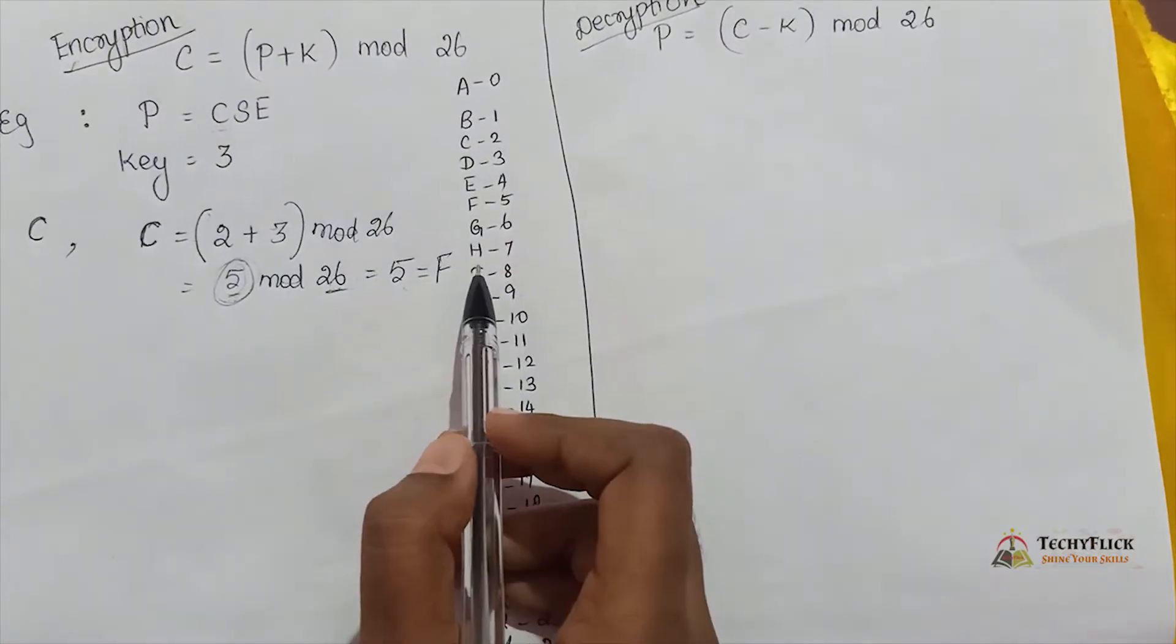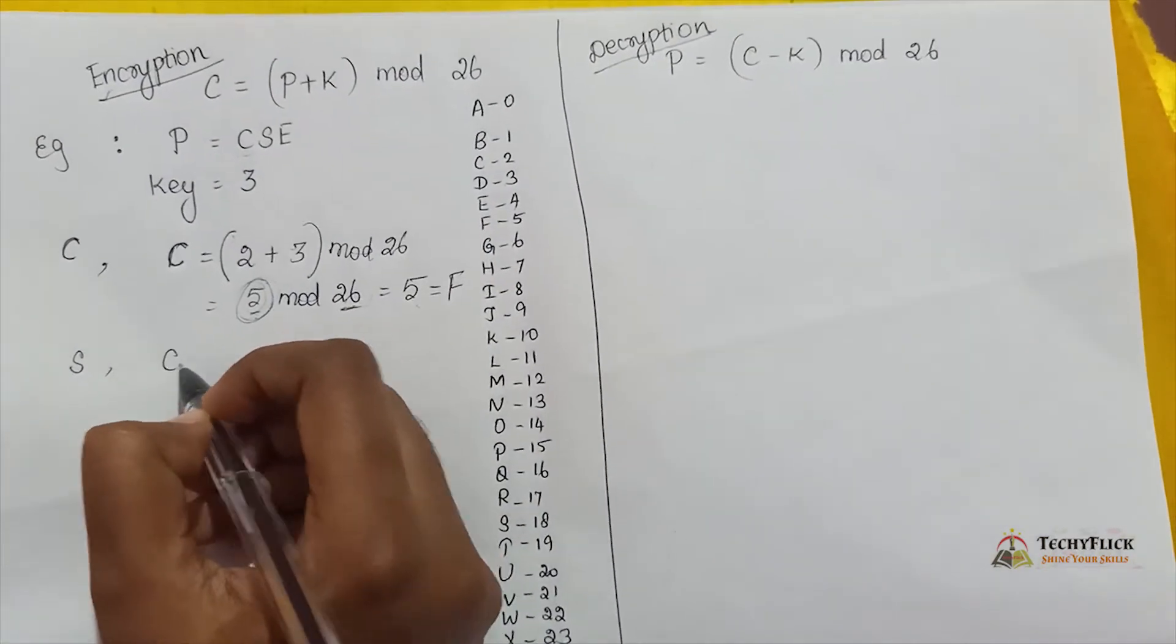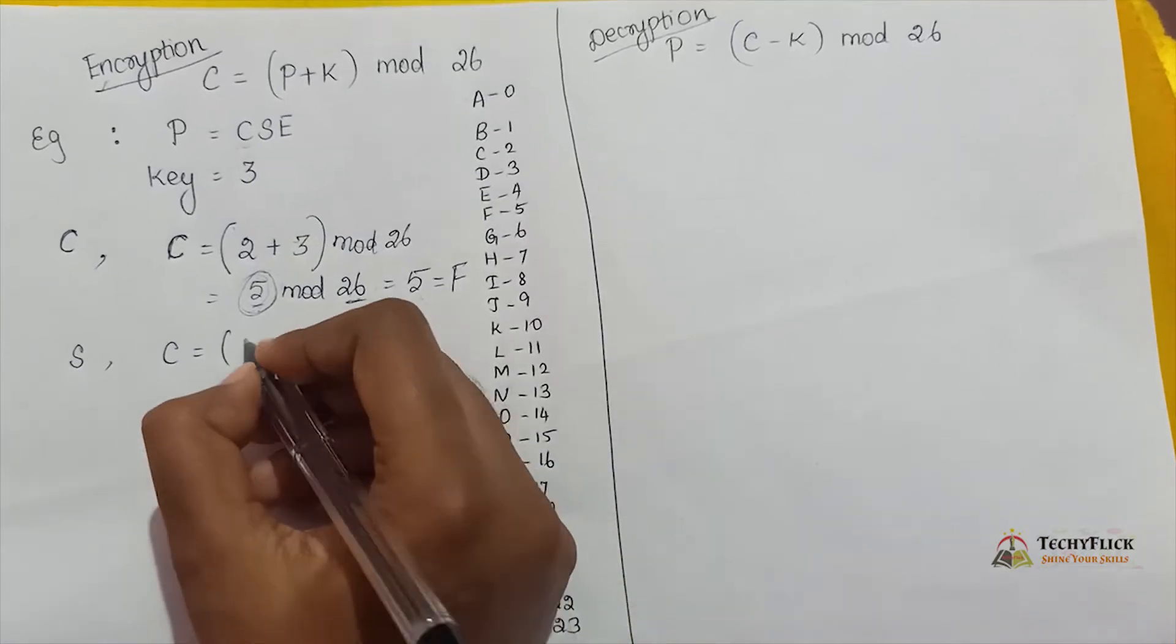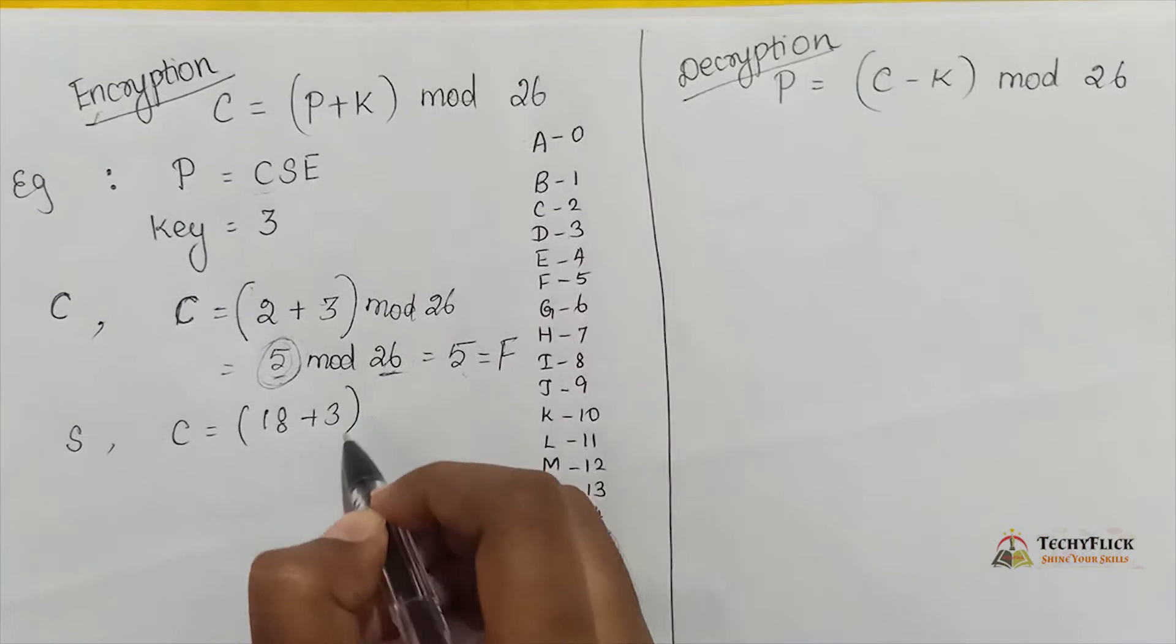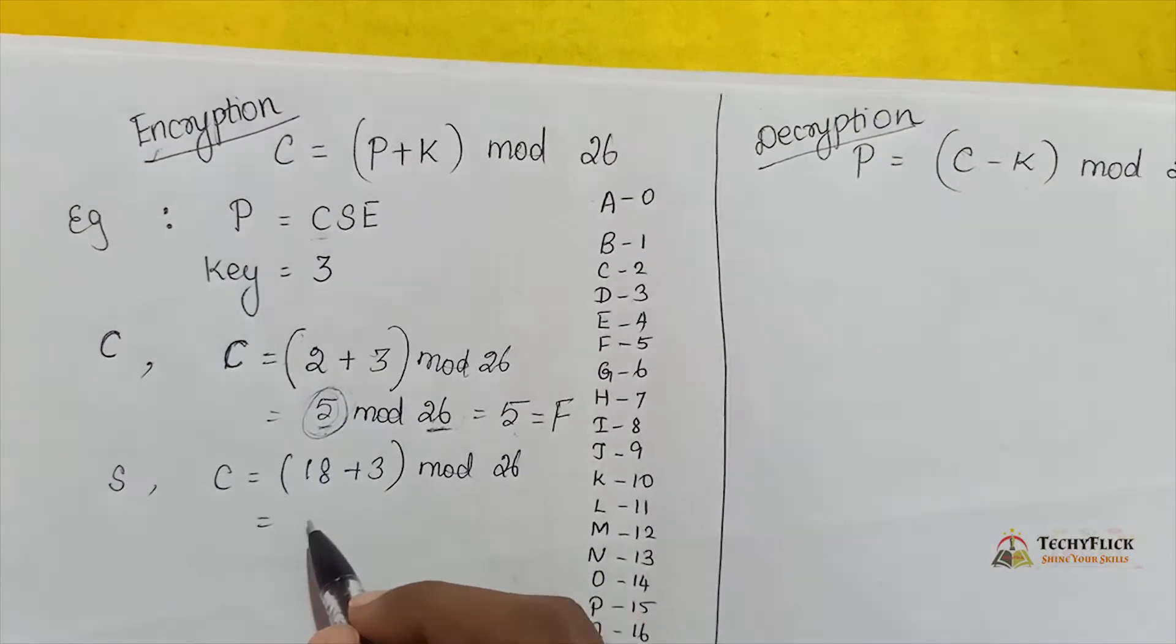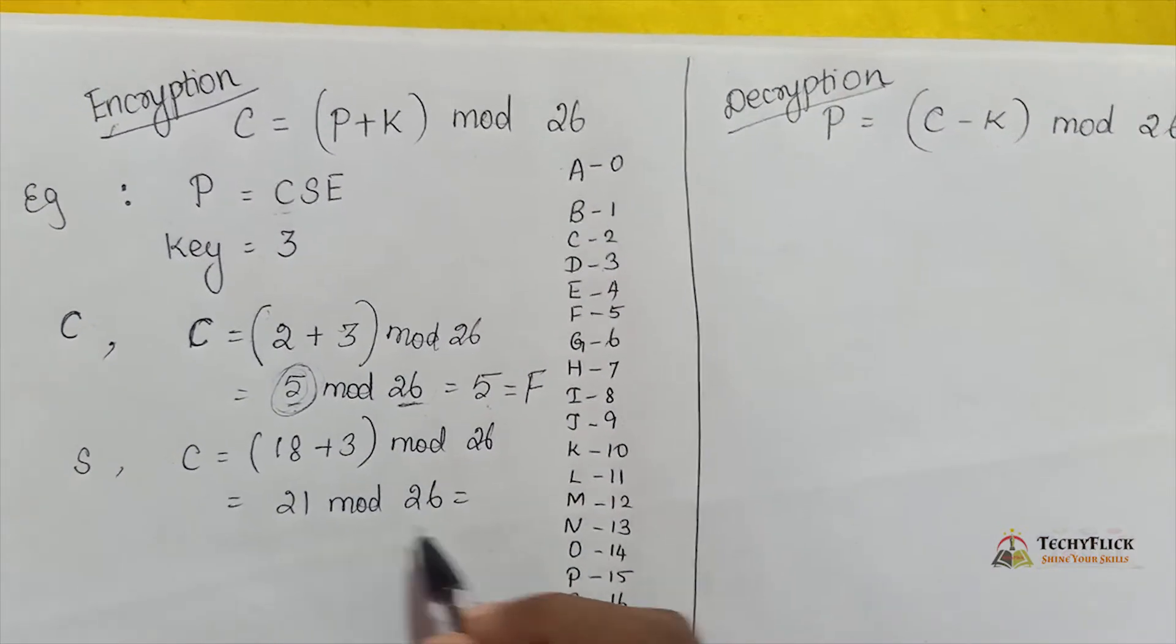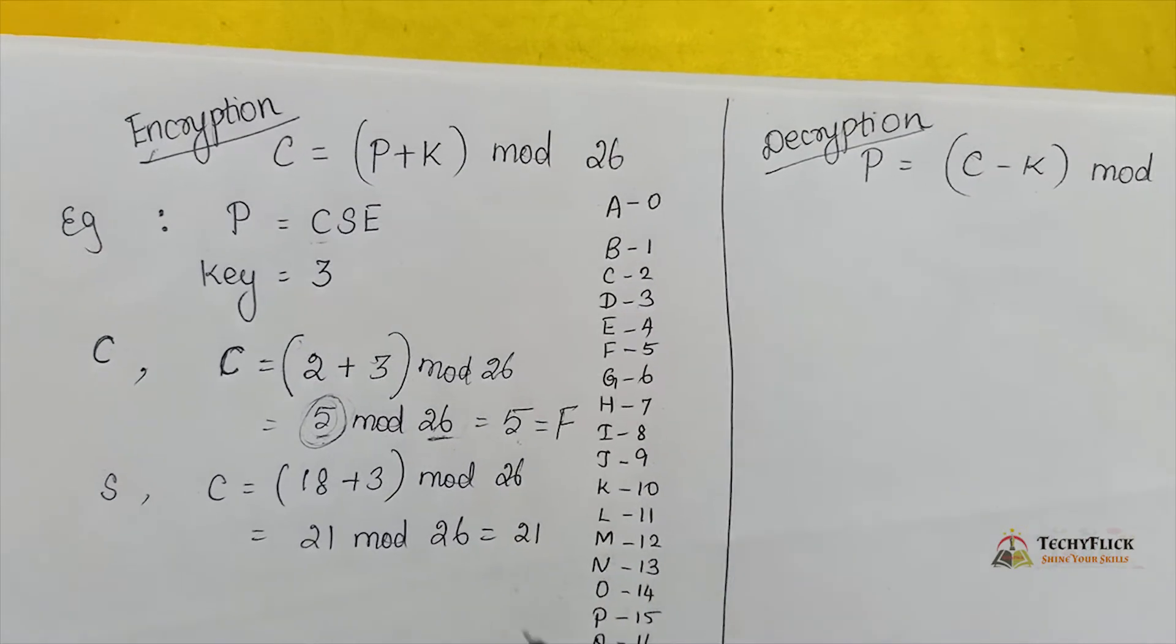Next is S. S has value 18, so 18 plus 3 mod 26. 18 plus 3 is 21, 21 mod 26. The answer is 21, and 21's value is V.